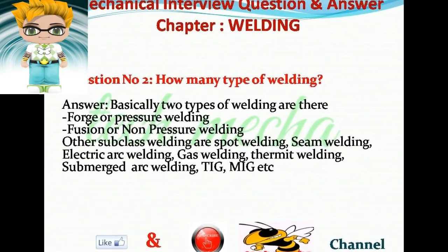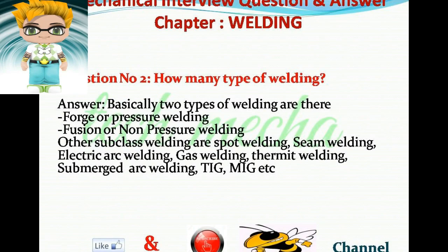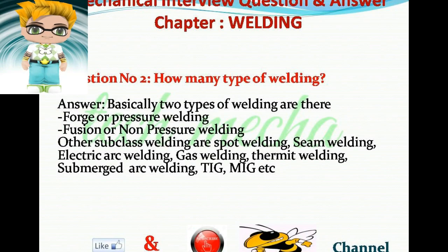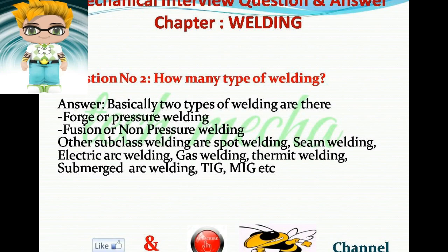Question number two: How many types of welding are there? Answer: Basically two types of welding — one, forge or pressure welding; two, fusion or non-pressure welding. Other subclass welding types are spot welding, seam welding, electric arc welding, gas welding, thermic welding, submerged arc welding, TIG, MIG, etc.